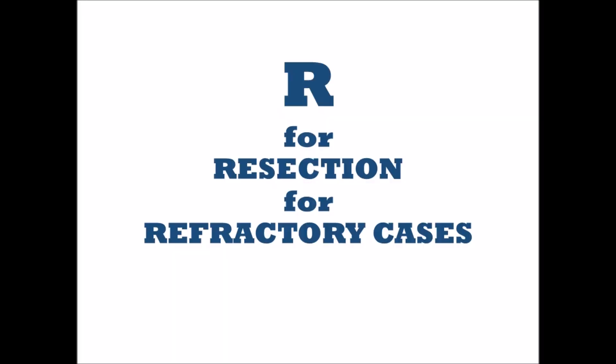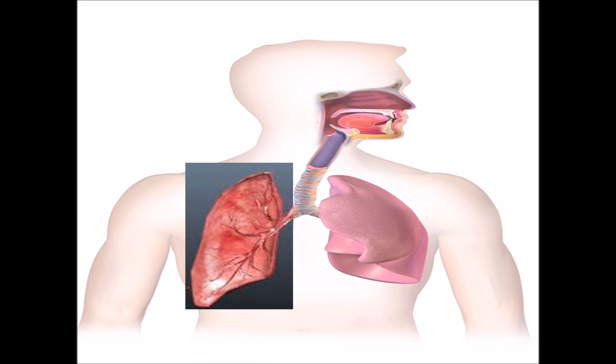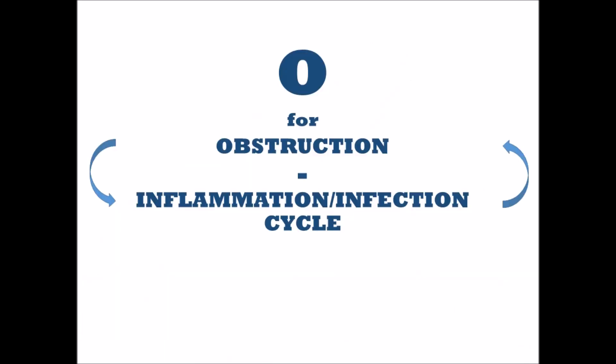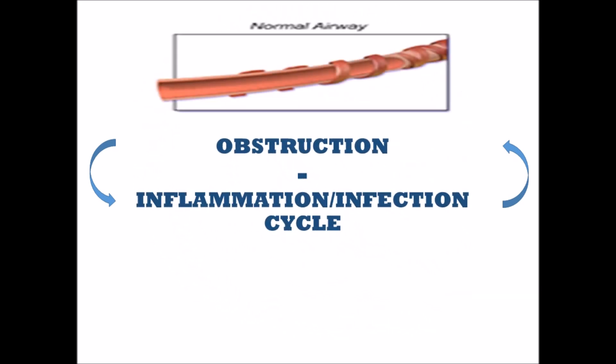R is for resection for refractory cases — when conservative management fails, a part or the whole lung can be resected. O is for the obstruction-inflammation-infection cycle: obstruction of the bronchioles by secretions leads to inflammation and infection, becoming a focus of infection. This vicious cycle continues, converting a normal airway into a bronchiectatic airway.